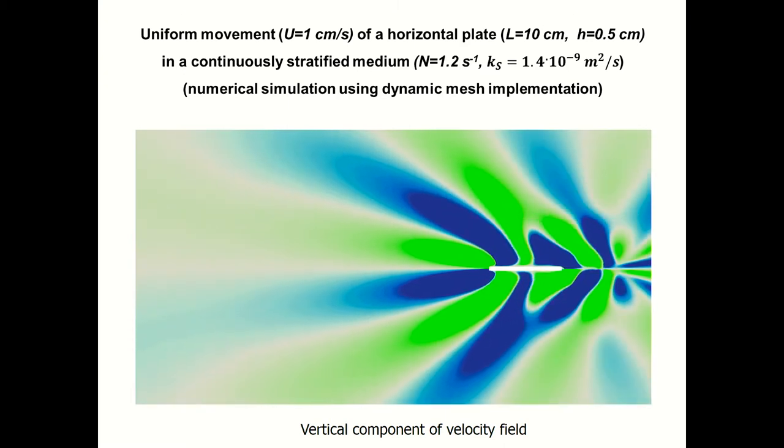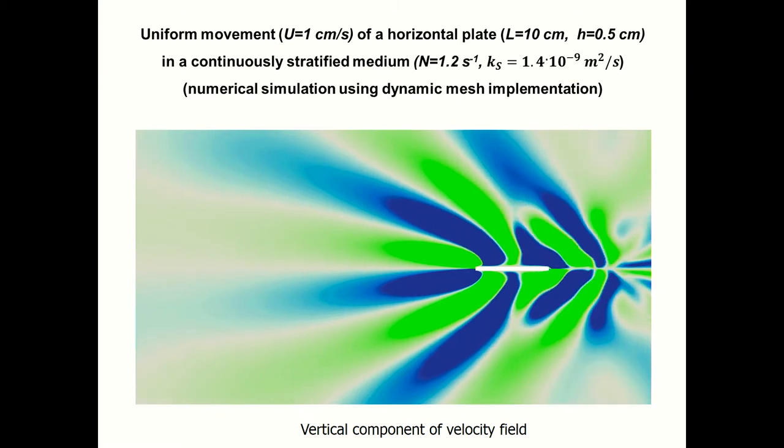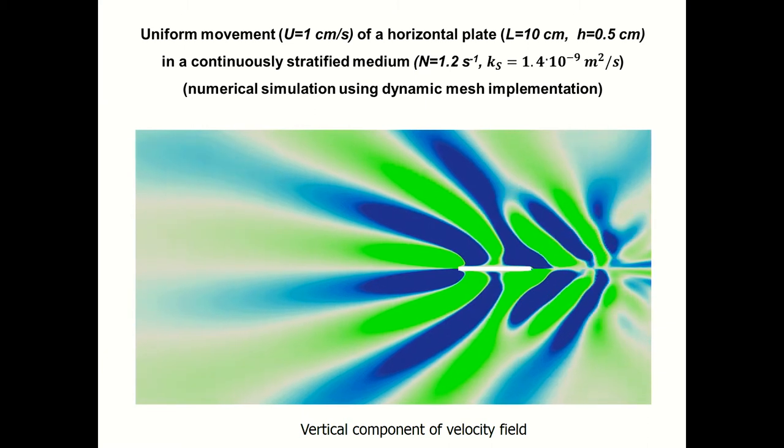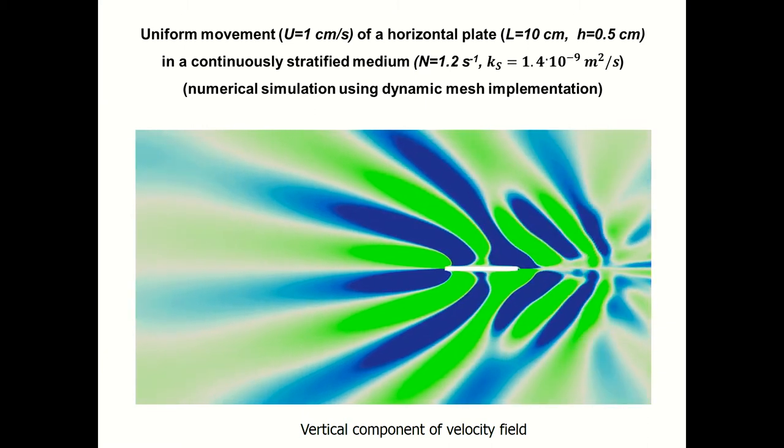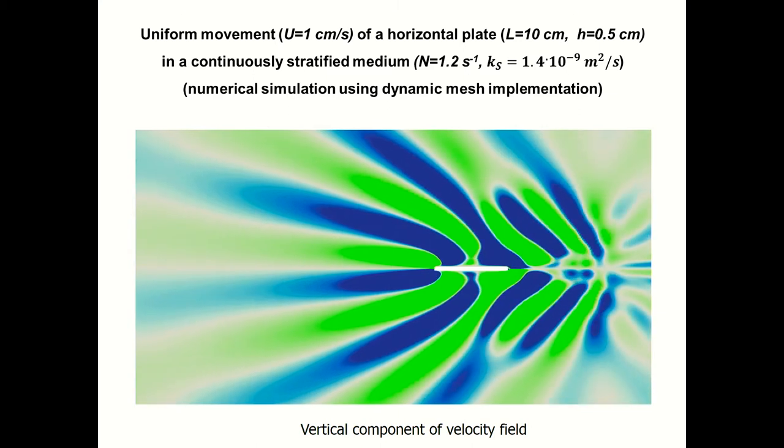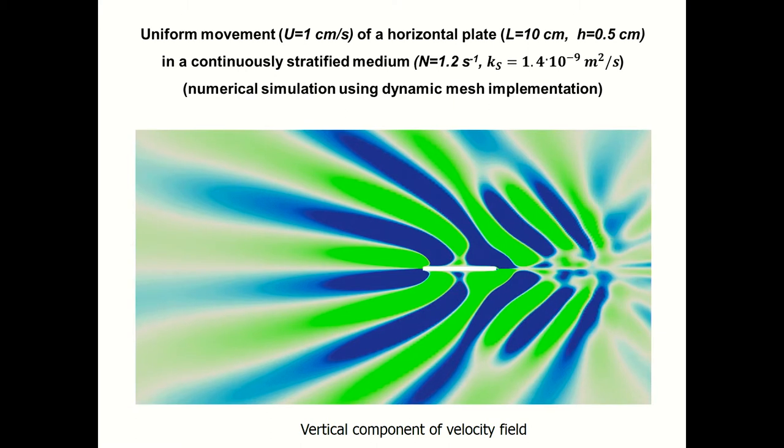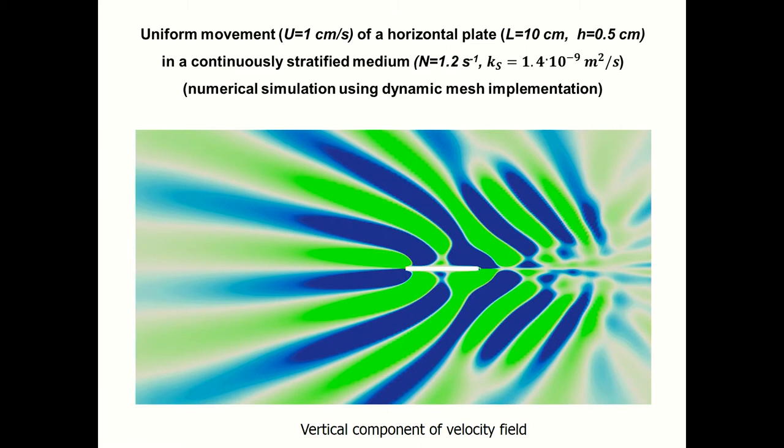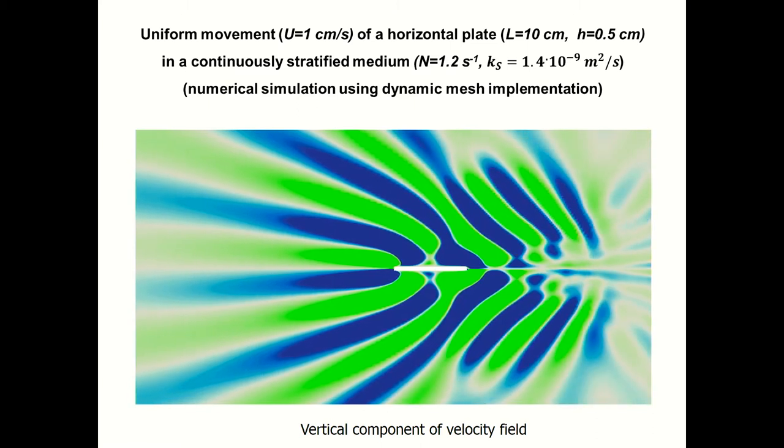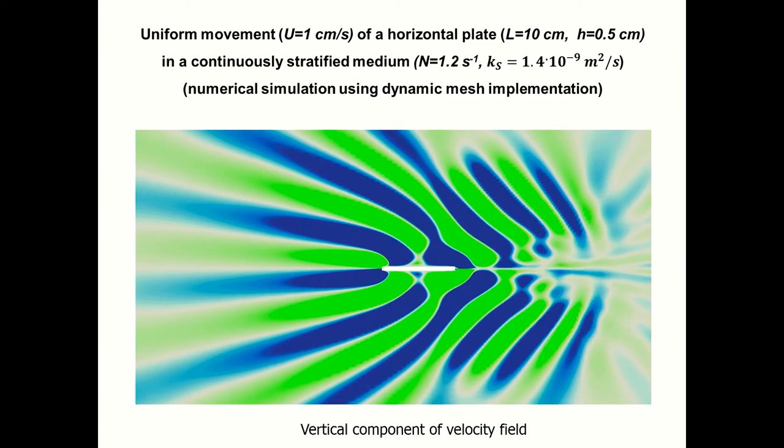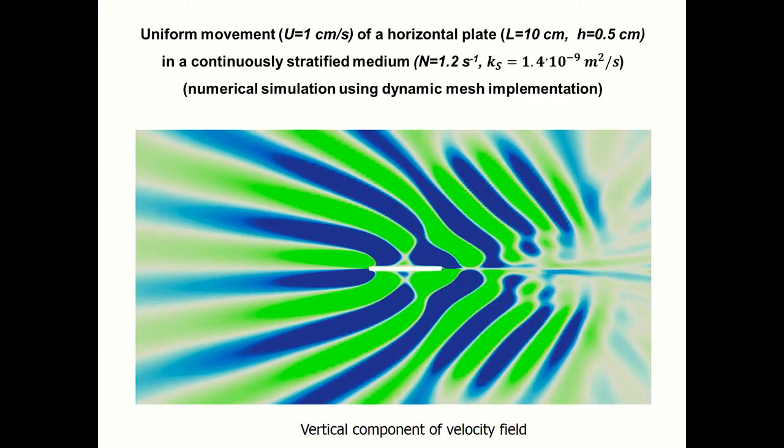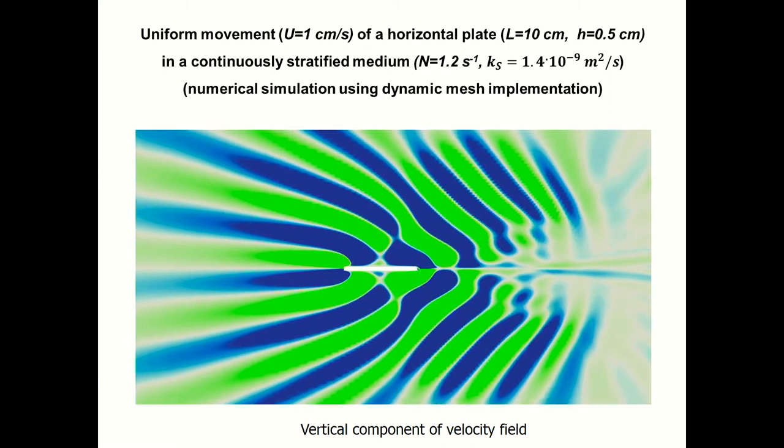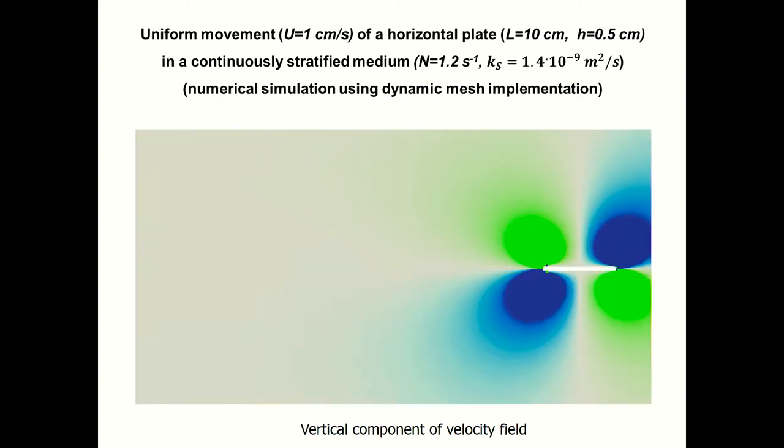What happens when the obstacles begin to move? The structure of the flow changes dramatically and we see formation of attached internal waves and upstream perturbations. Here is some numerical simulation using dynamic mesh techniques. It's upstream perturbations which tend to horizontal and some attached internal waves are formed in the wake. This is relatively small velocity of movement, one centimeter per second.